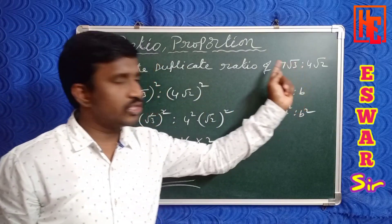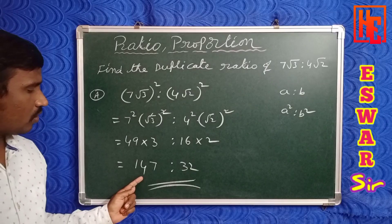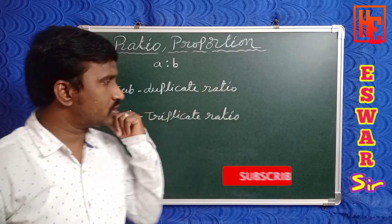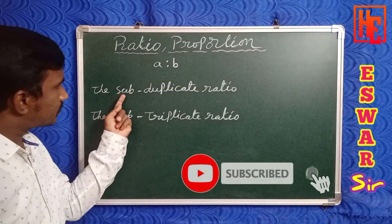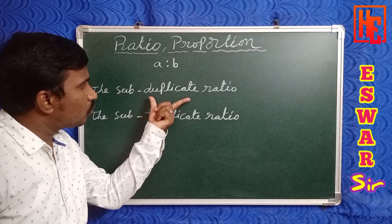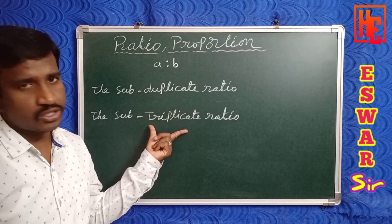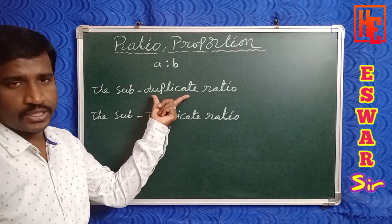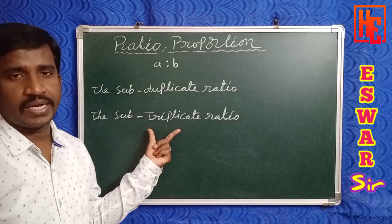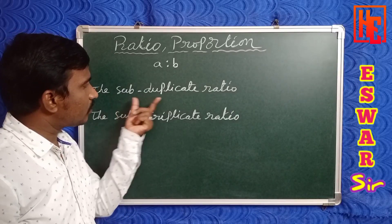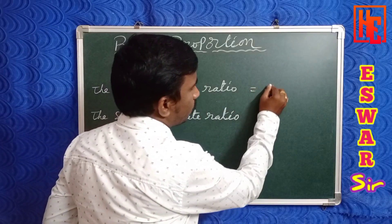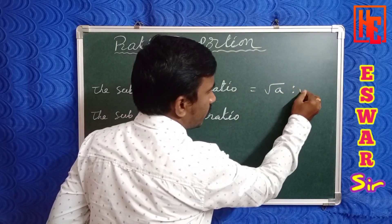Now check two more types of ratios. The sub-duplicate ratio of a is to b means the square root of a is to the square root of b.